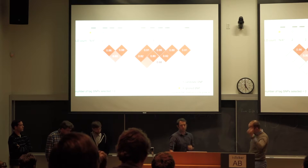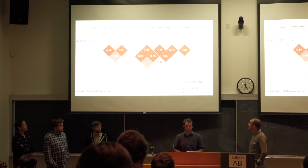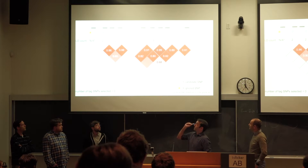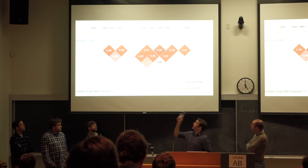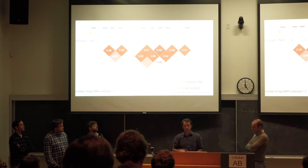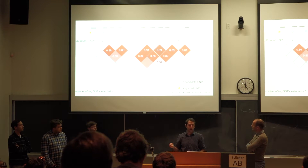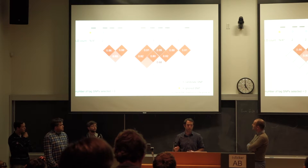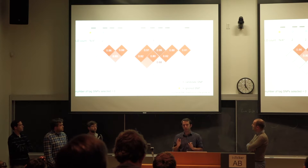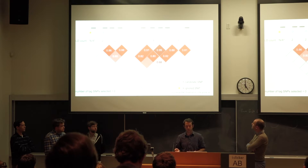To walk through the algorithm with a toy dataset: along the top there is a section of a chromosome with a series of SNPs. The first step is to consult the blacklist and remove any SNPs we don't want to consider, to save time and computational resources. We also remove any SNPs that have low minor allele frequencies.